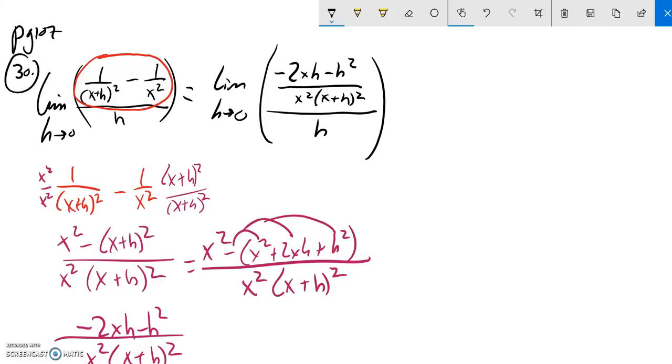Notice that up top I can factor an h out of this. So this would be like h times (negative 2x minus h). So now this thing looks like this: h times (negative 2x minus h) over x squared times (x + h) squared, all over h.